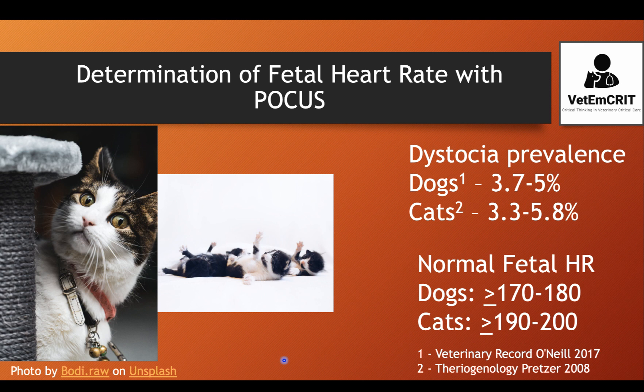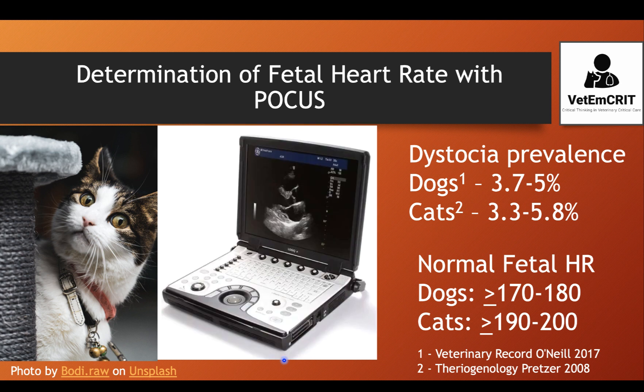In dogs, the normal heart rate of the fetus should be at least 170 to 180 beats per minute. In cats, it could be higher, starting with 190 to 200 beats per minute.